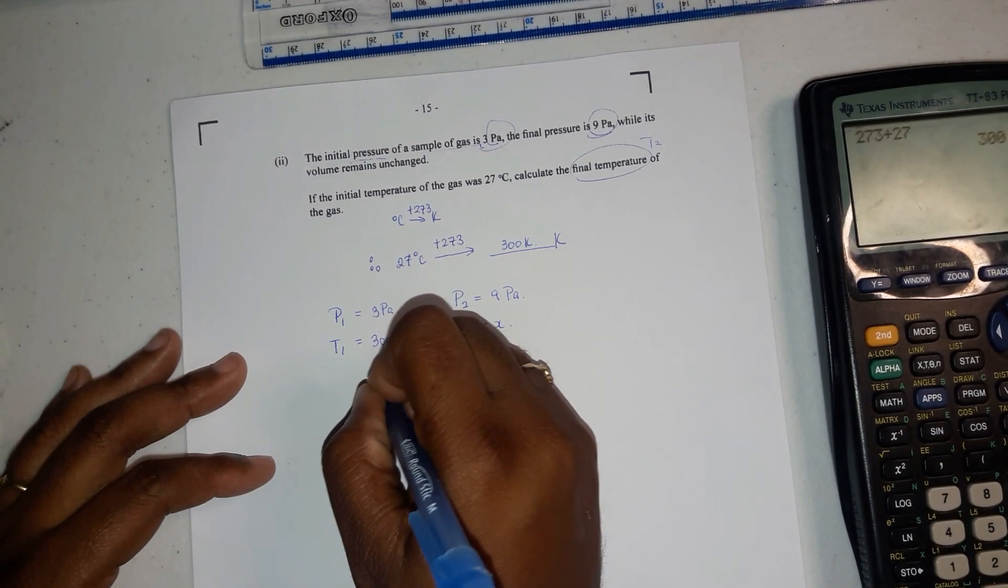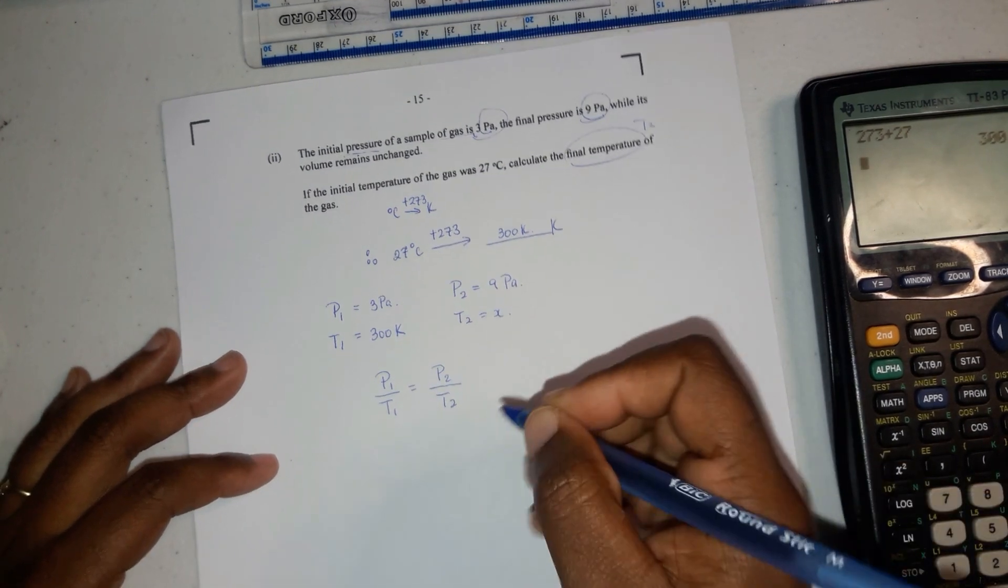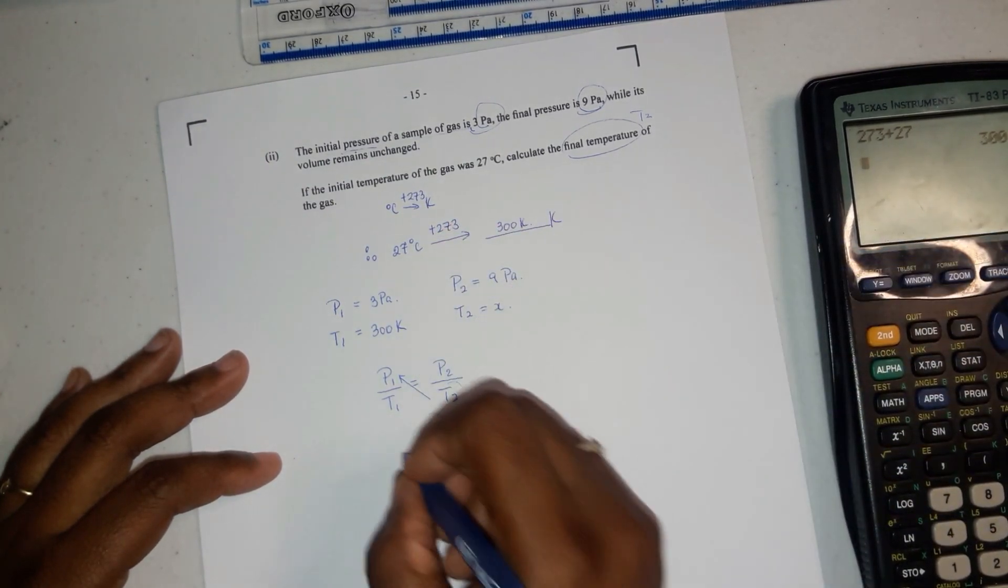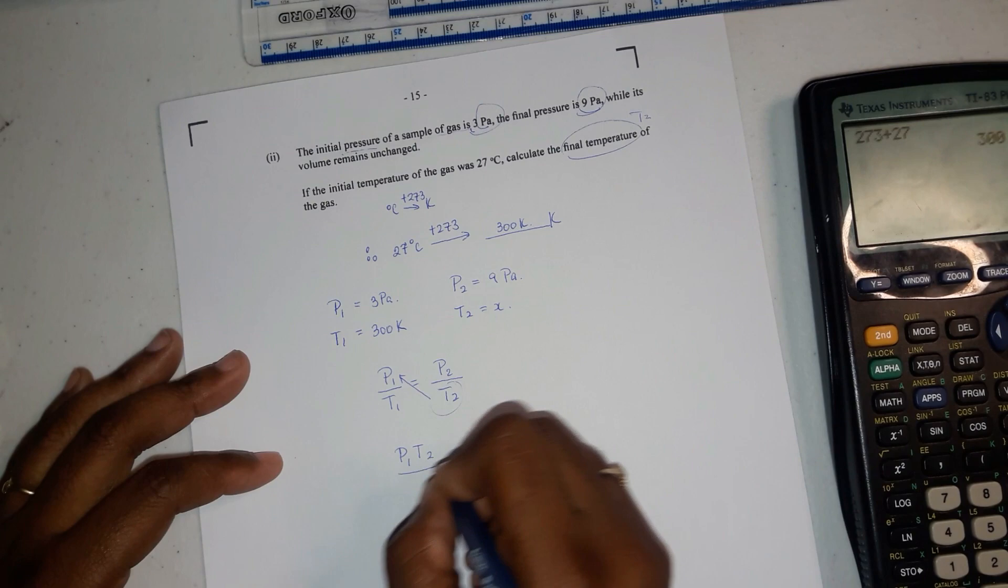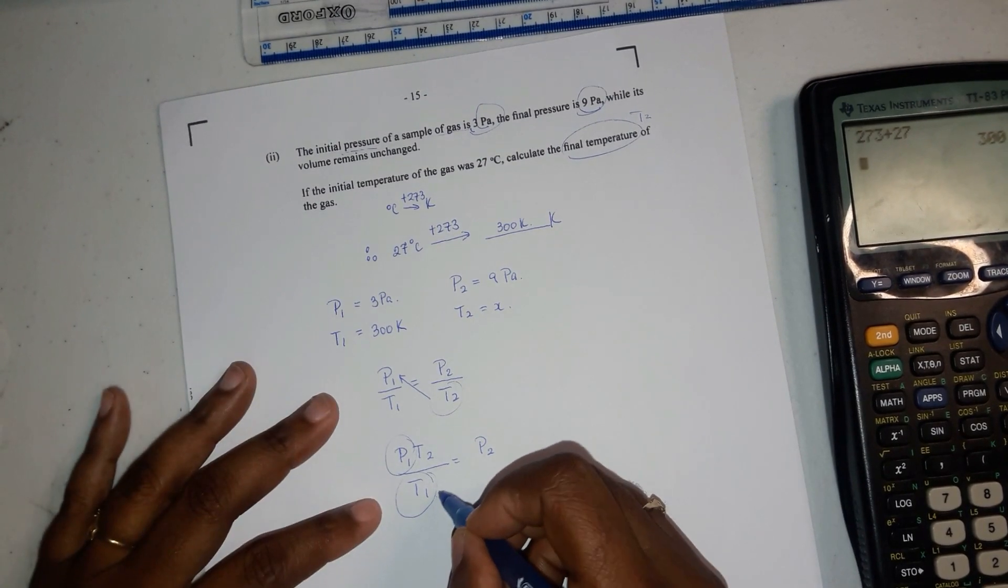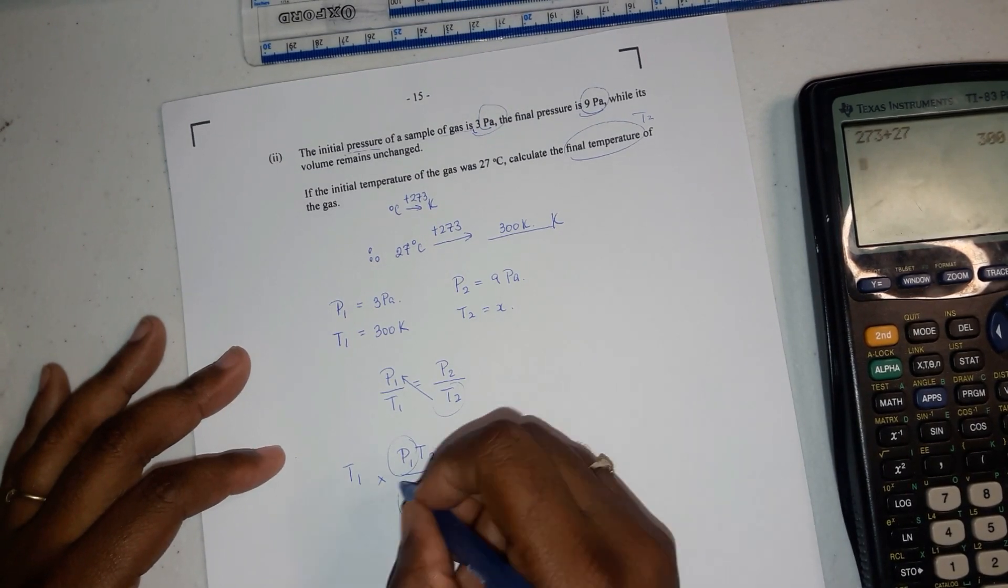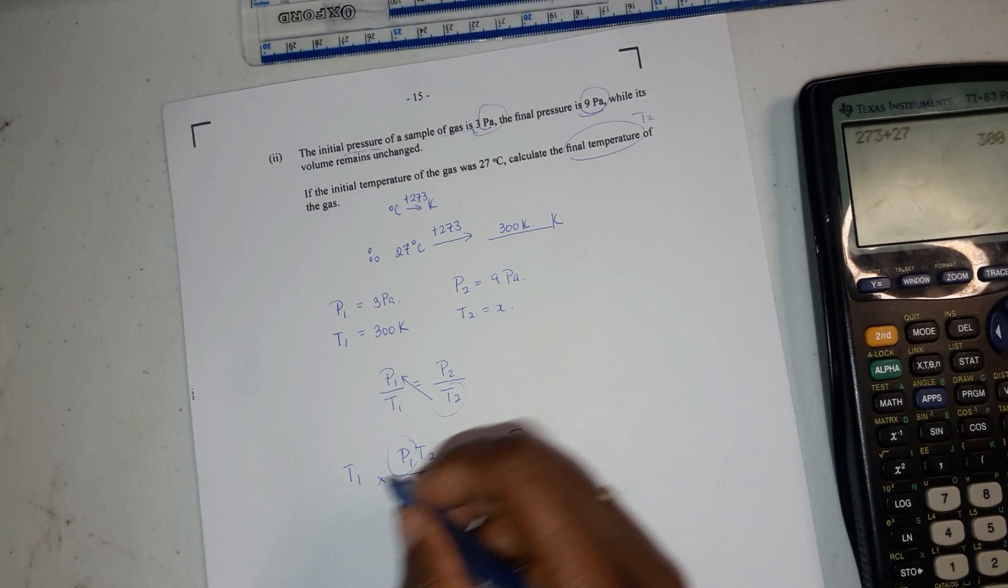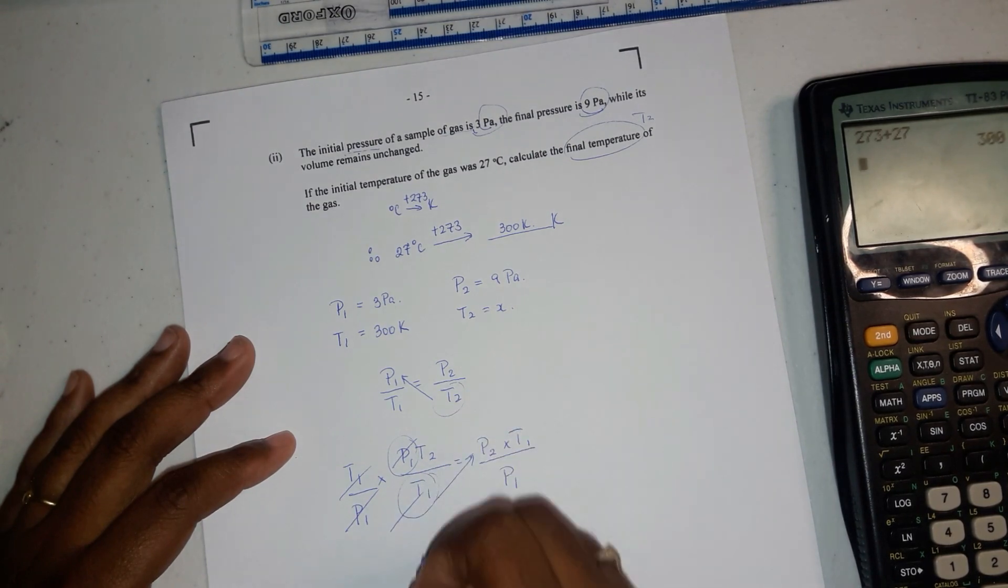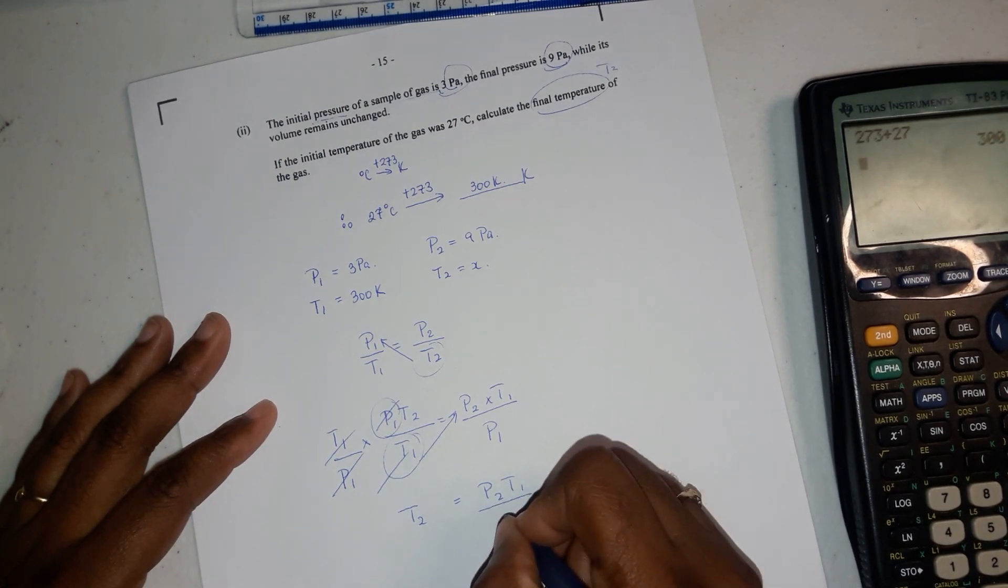Using the equation P1 over T1 equals P2 over T2, we substitute, but first let's transpose. We need to put T1 in the numerator, so we're going to move it up here. So we're going to have P1 T2 over T1 equals P2. Now we need to get rid of these fractions. Since this is being divided, you have to multiply. So you're going to multiply T1 and multiply T1 here. And if this is being multiplied, we're going to divide it. So we're going to divide by P1 and we're dividing by P1. So we're going to cancel out and we're left with T2 equals P2 T1 over P1.